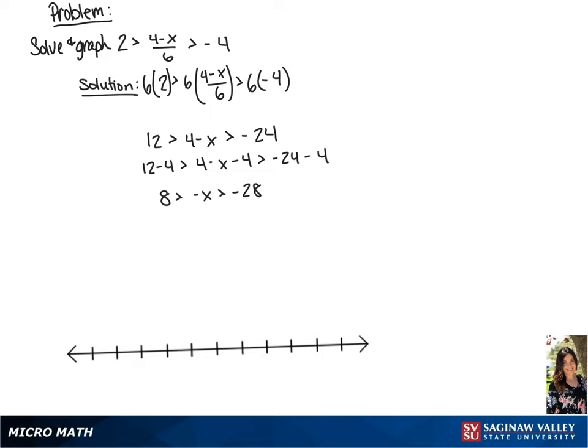The next thing we are going to do is divide all sides of this inequality by negative 1. Since we are dividing by a negative, we are going to flip both inequality signs.